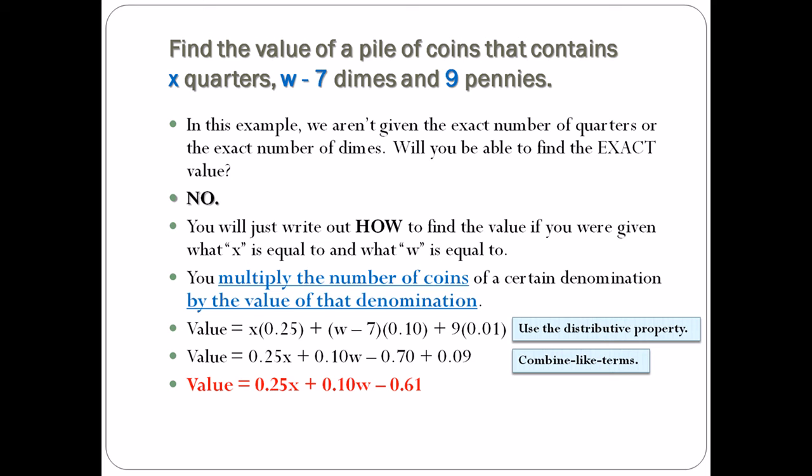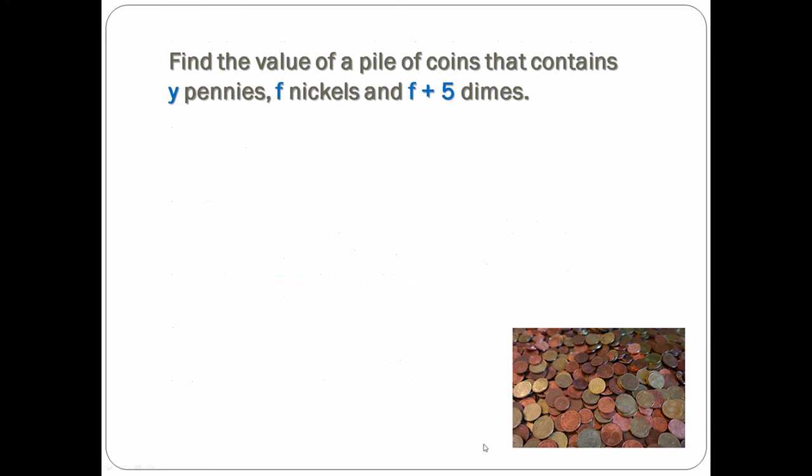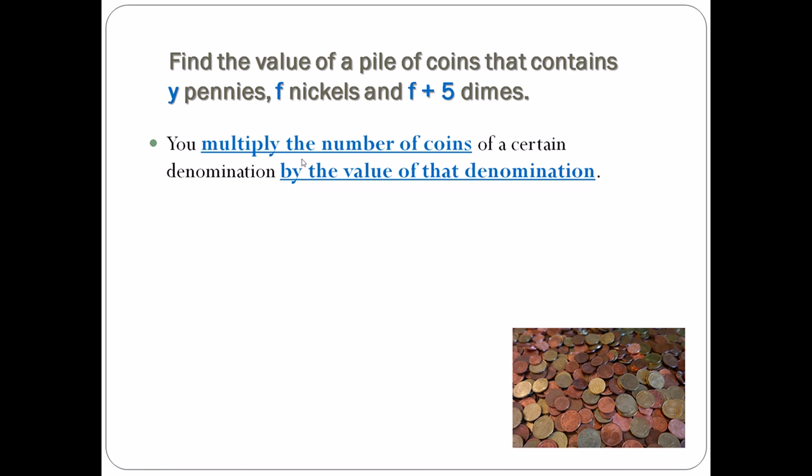Should we do another one? Yes. I knew you'd want to—that's why I prepared one more for you. I have another pile of coins, and there are y pennies, f nickels, and f plus five dimes. That's right, I'm not telling you how much there are any of them. So the strategy is the same: you multiply the number of coins of a certain denomination by the value.